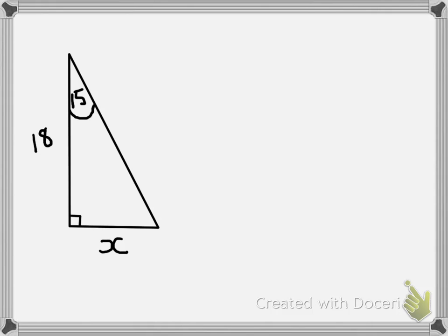So the first thing that we're going to do is label our hypotenuse side. We know that our hypotenuse is always the side opposite the right angle, or it can also be identified as the longest side in the right-angled triangle.